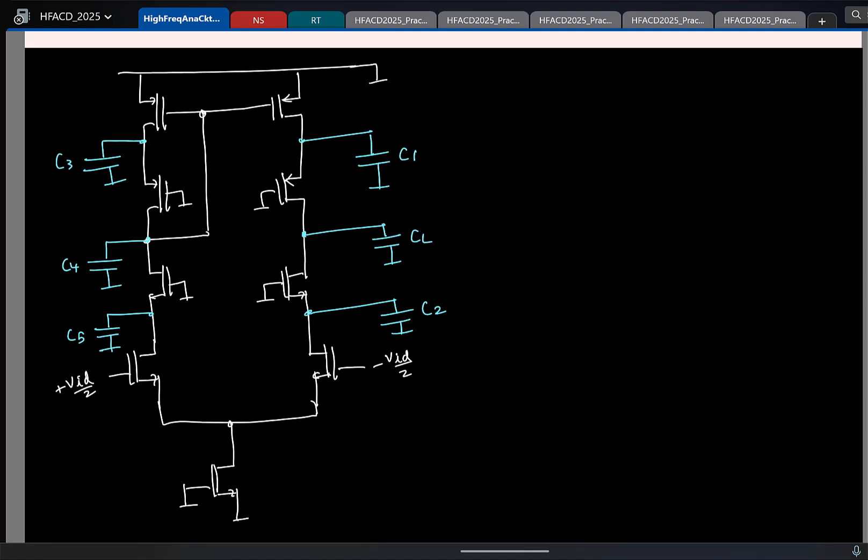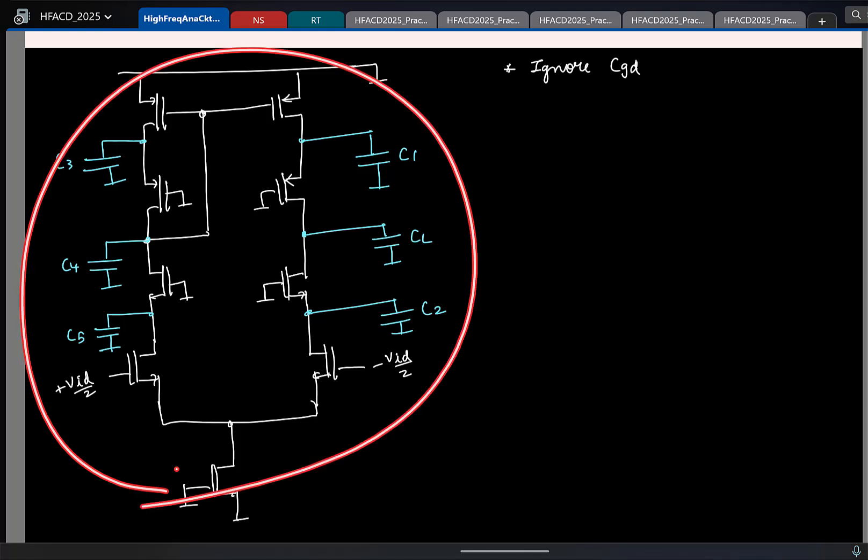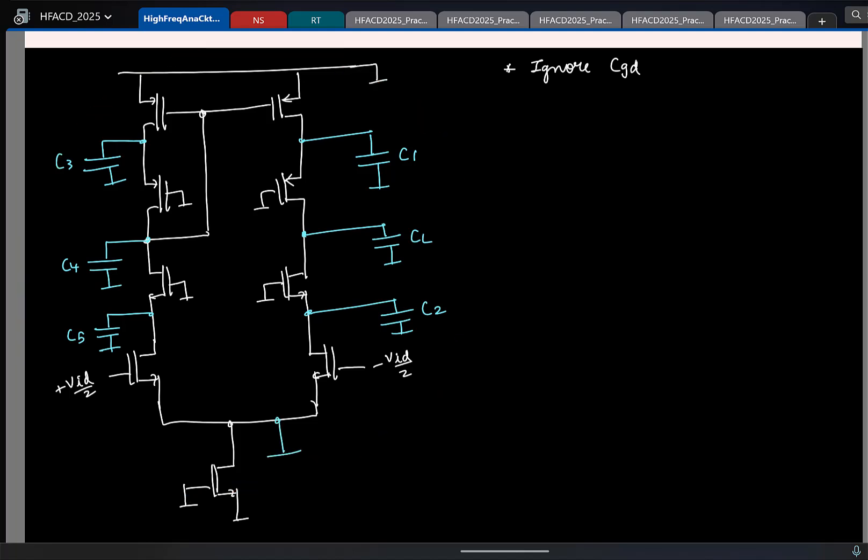And just like the 5 transistor OTA, here also I will ignore the CGD because if I include CGD that is introducing unnecessary coupling between different time constants, so I will ignore CGD. That will make life simple. And again I am looking at the differential mode part, so again here there is a capacitor.